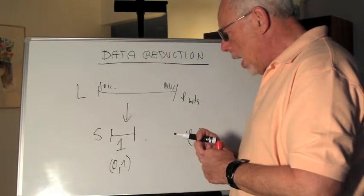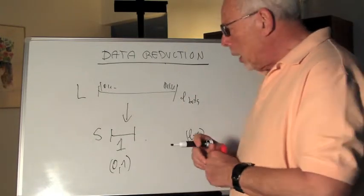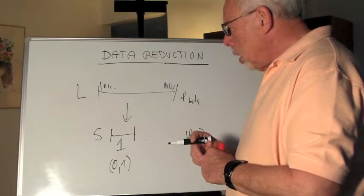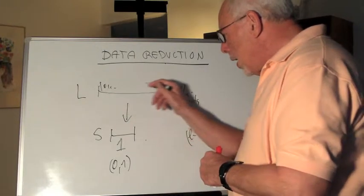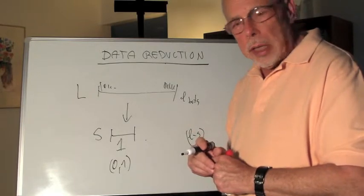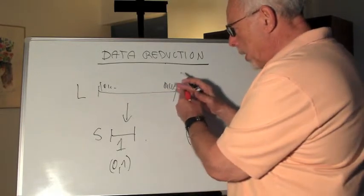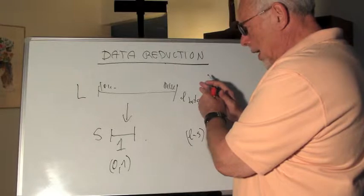Now the recipient that will receive this string and receive this short string will be able also to add all the numbers here. And if the recipient adds the number and he gets an odd and here it's an odd, he assumes that no bit has flipped.